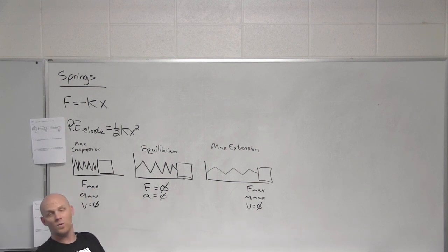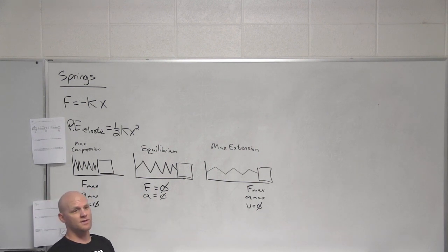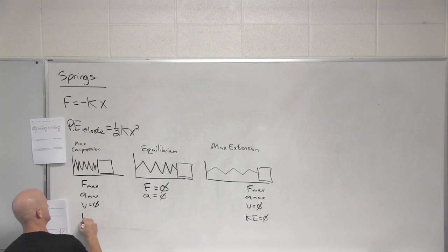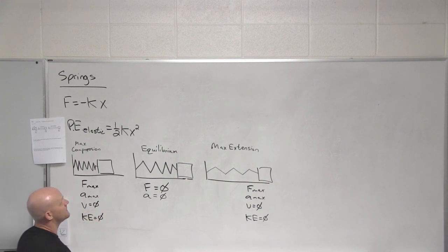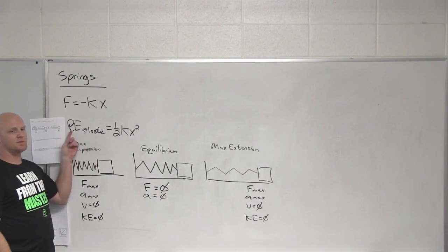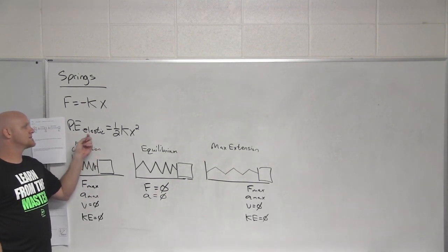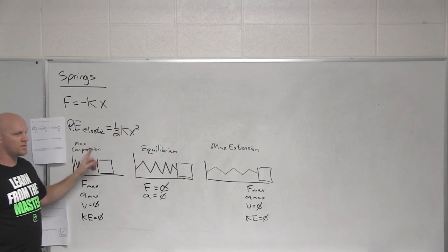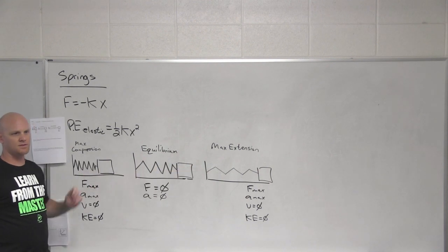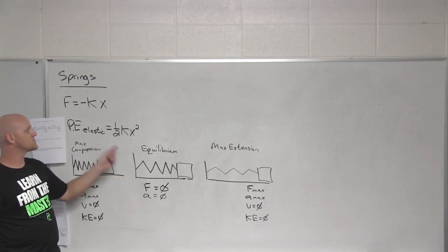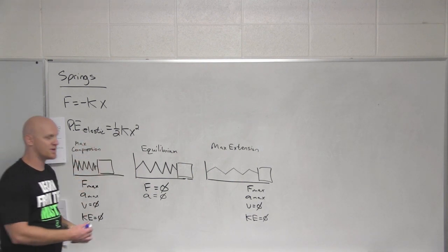And if its velocity is zero, what kind of energy does it not have at those points? No kinetic energy. Now the potential energy of a spring — it's not gravitational in this case, it's elastic potential energy. It's related to having a displacement. Where do we have no displacement? At the equilibrium position — which is why we have no force as well. In addition to having no force, we also have no elastic potential energy at that point.